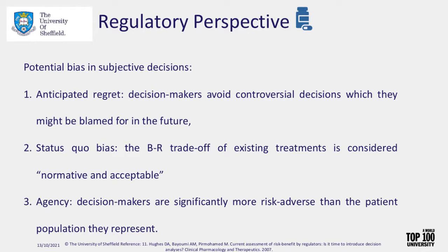This can create potential issues. A paper by Hughes et al listed three key psychological considerations: anticipated regret, where decision makers may avoid controversial decisions if they think they might be blamed; status quo bias, where treatments currently in practice are considered acceptable and their trade-off already deemed normative; and decision makers being significantly more risk-averse than the patient population they represent. To avoid these potential biases, there is potential to use quantitative benefit-risk methods that may also include patient preferences themselves.